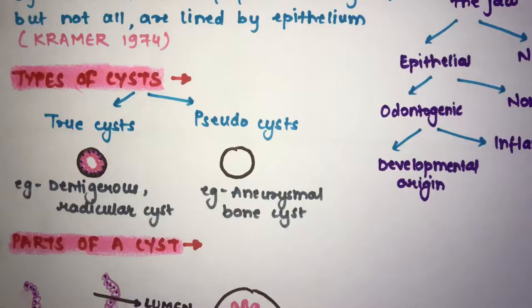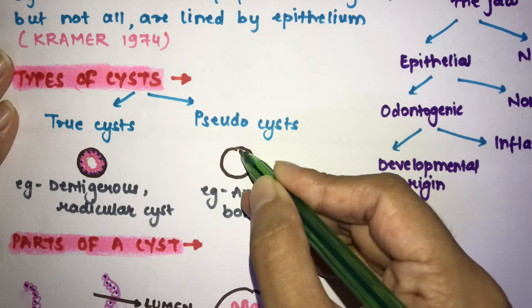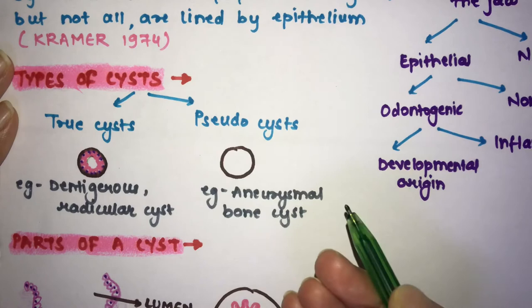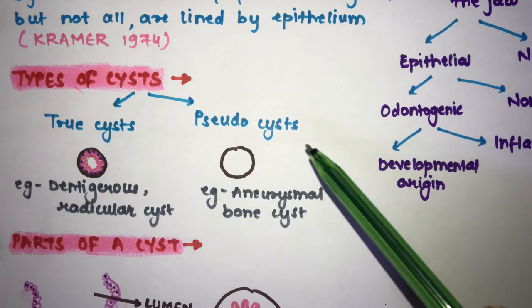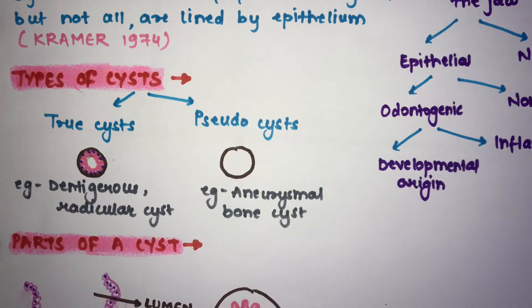You can see here: this is a cyst — a cavity lined by epithelium. In a pseudocyst you don't have this epithelium lining, so it is known as a false cyst. An example of a pseudocyst is the aneurysmal bone cyst. There are around five to six pseudocysts only; all the rest are true cysts lined by epithelium.